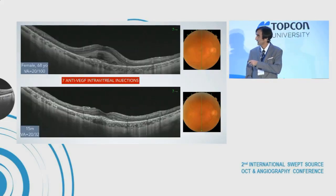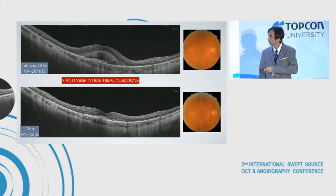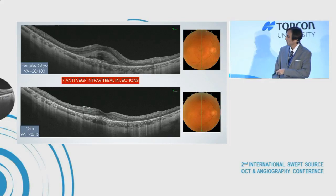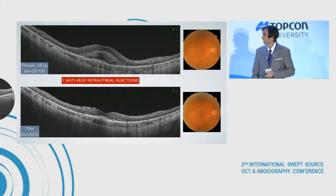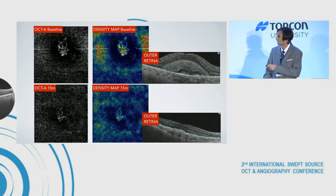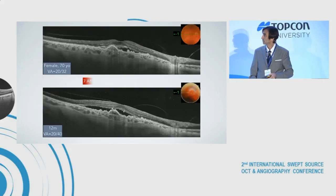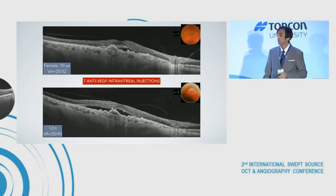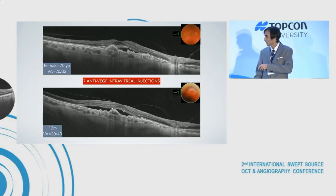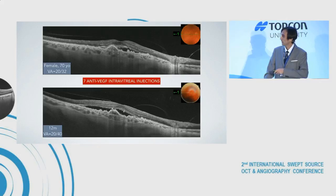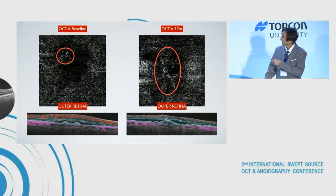A similar case: a type 2 CNV treated with seven intravitreal injections, 15 months of follow-up. No fluid after treatment on B-scan. But with B-scan alone we don't see the vessels — we don't see the source of the problem. With OCT angiography, at the same baseline, we see a clear regression of the neovascular complex. On the contrary, there is a poor responder: a type 1 CNV treated with seven intravitreal injections, showing more fluid after one year and a clear enlargement of the CNV area on OCT angiography.